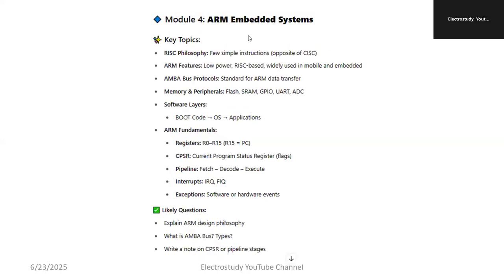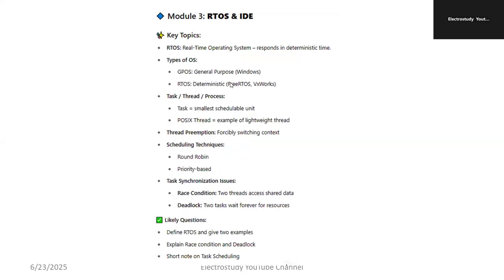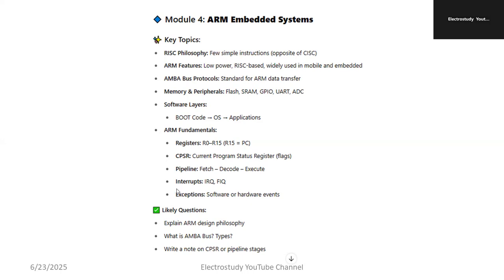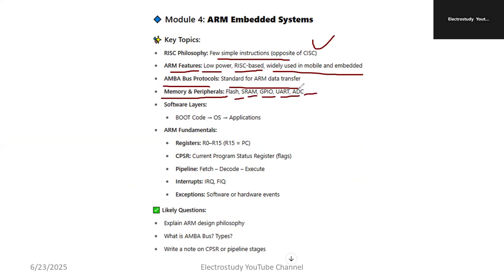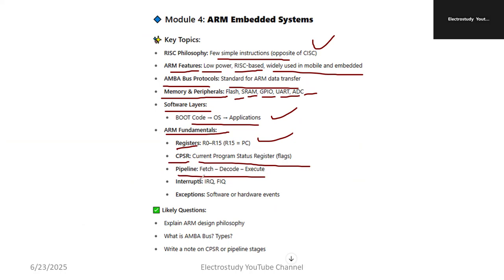Module 4: ARM Embedded Systems. The major topics are RISC philosophy — what do you mean by RISC philosophy? Talk about few simple instructions, or the opposite of CISC. ARM features include low power consumption, RISC-based, and widely used in mobile and embedded systems. AMBA bus protocol standard. ARM data transfer: memory and peripheral — Flash memory, SRAM, GPIO, UART, ADC — kindly elaborate. Software layers include boot code, operating system, and applications. Registers R0 to R15 — study the functions of R0, R1, and CPSR (Current Program Status Register). Pipeline: what is a pipeline and what are its major stages? Then interrupts: FIQ and IRQ. Exceptions: software and hardware events.